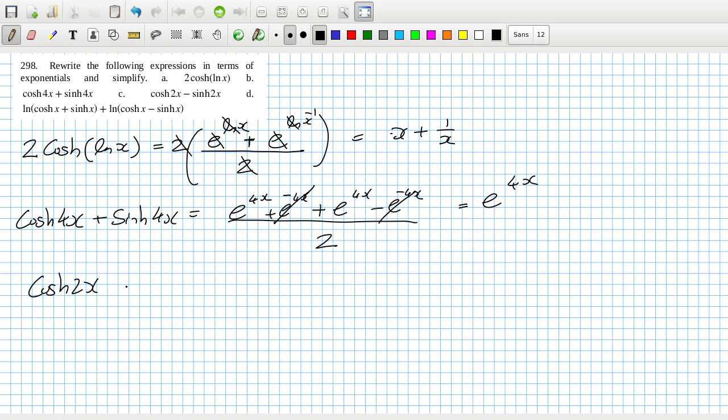Cosh 2x minus sinh 2x, so that will be e to the 2x plus e to the minus 2x minus e to the 2x minus minus so plus e to the minus 2x all over 2. That one cancels with that one, there's two of those so it's just e to the minus 2x.